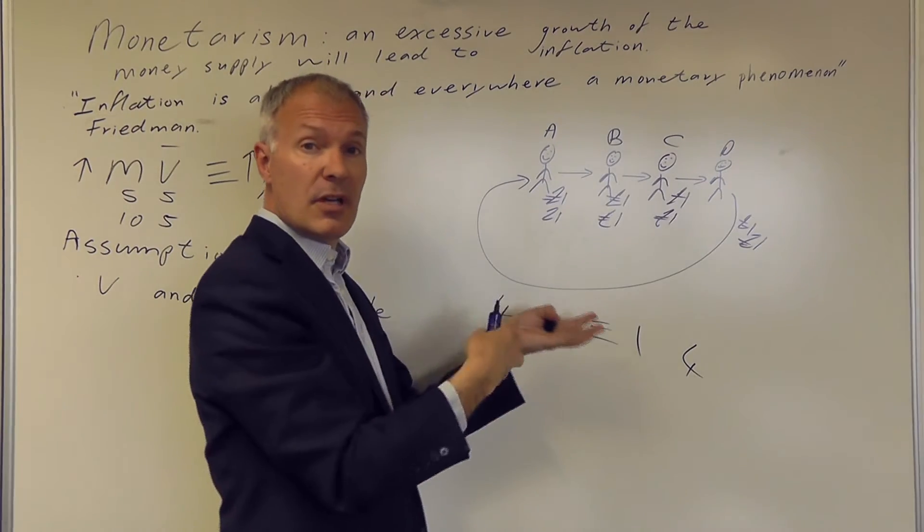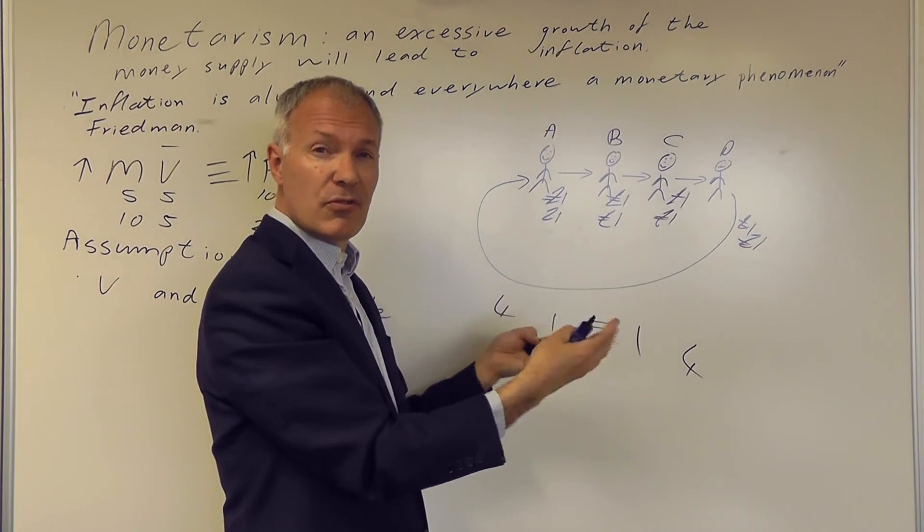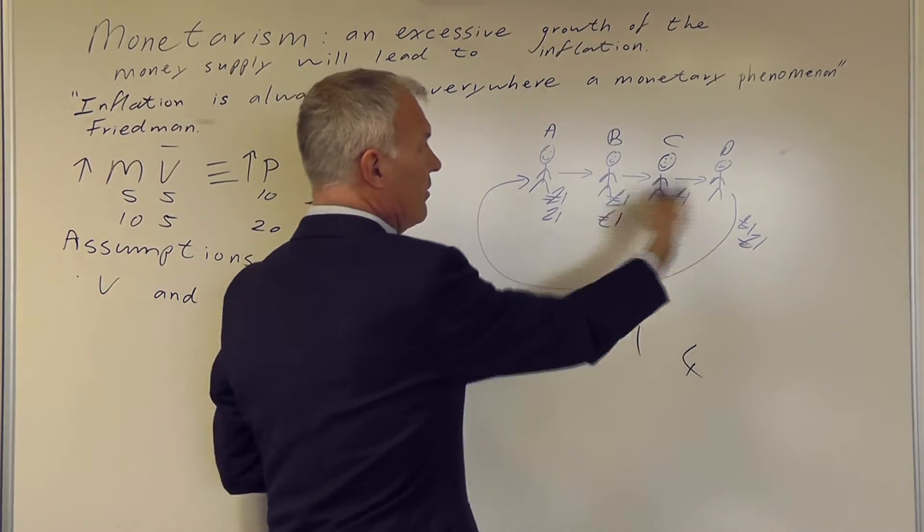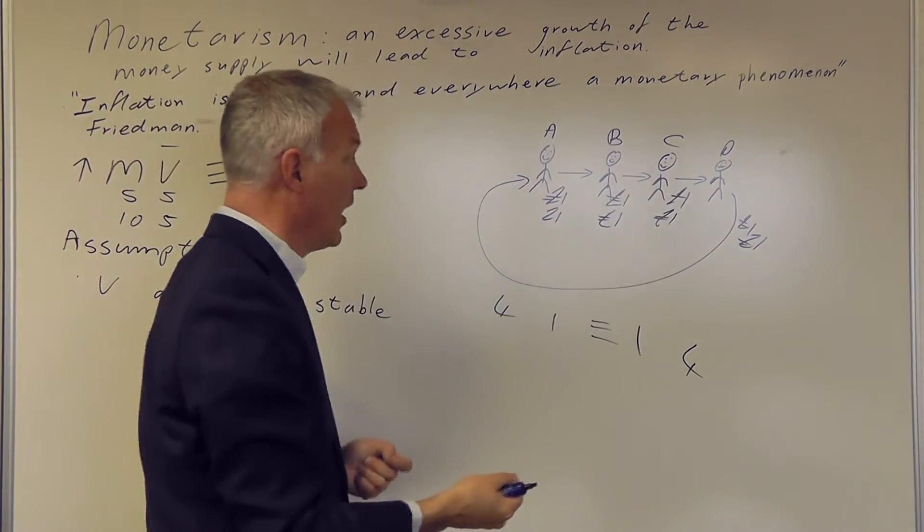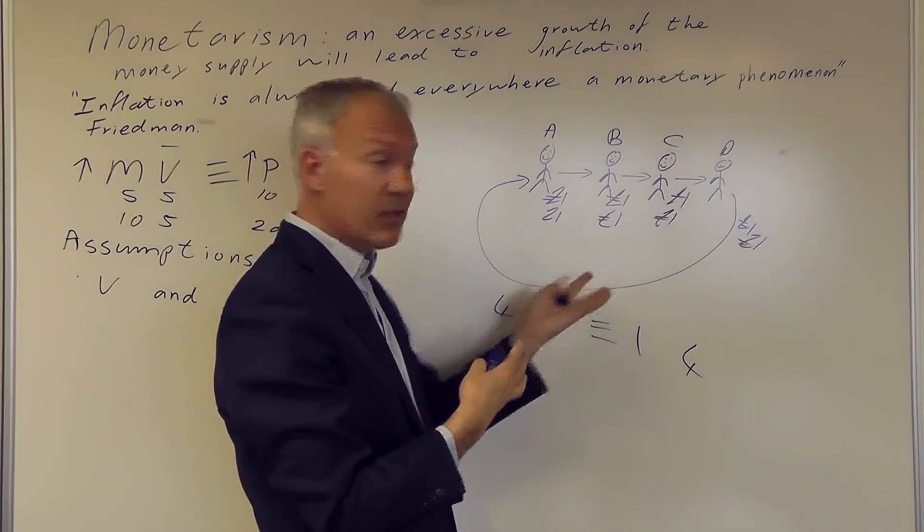They're still transacting the same amount of goods, the same real goods. Say they buy a loaf of bread from each other. There's still four loaves of bread. So there's four transactions. And that's really the output of that economy.